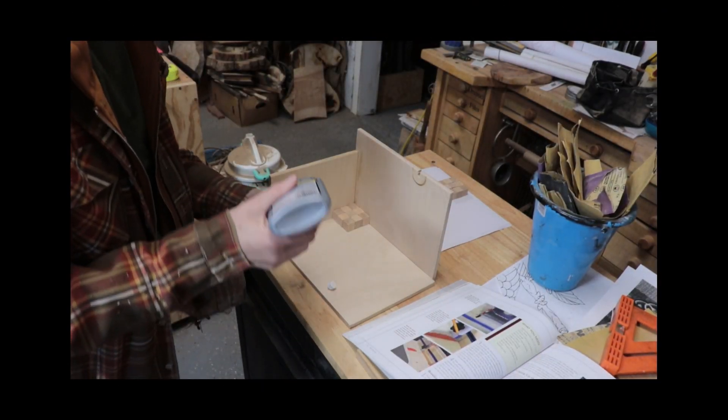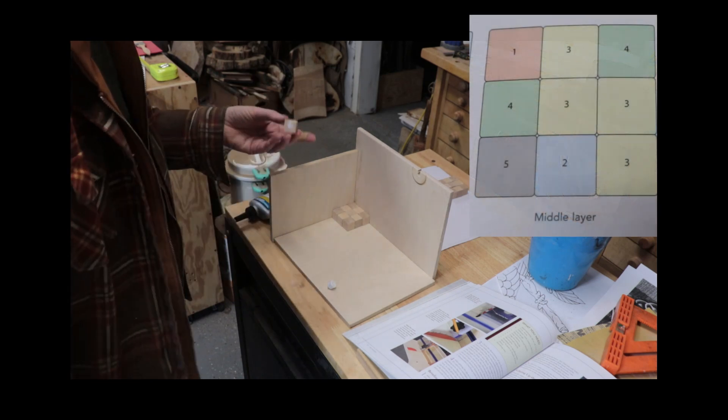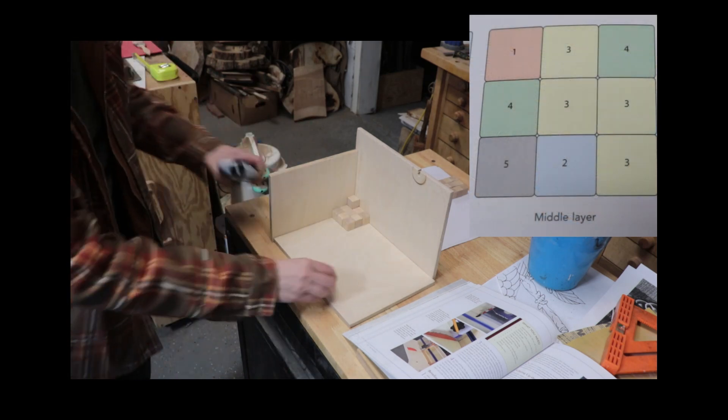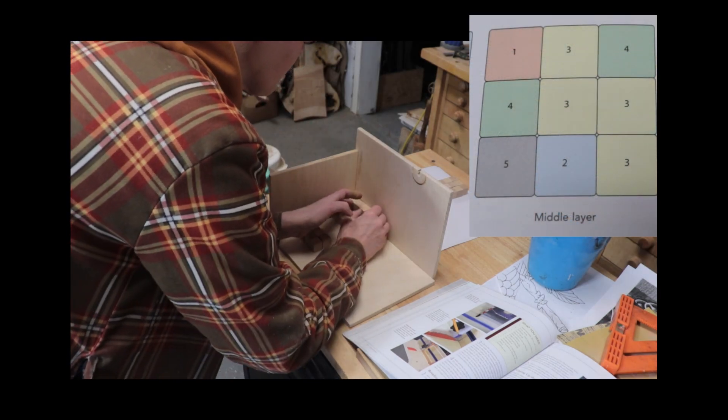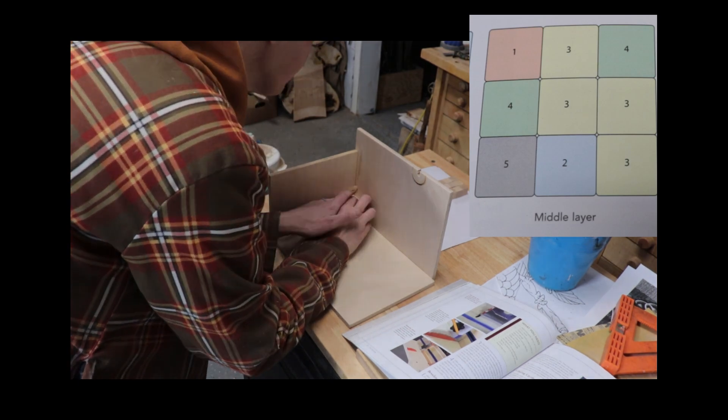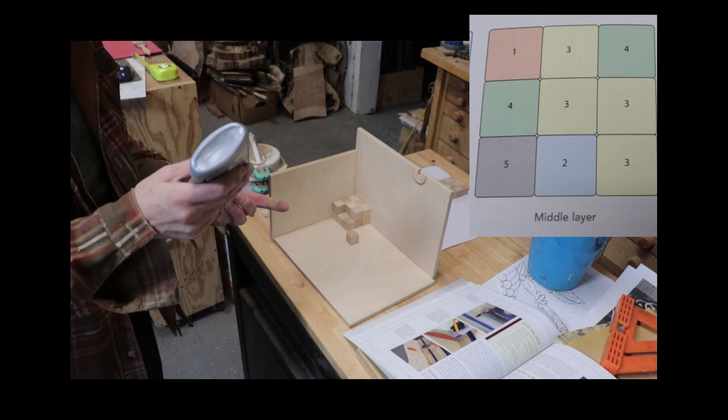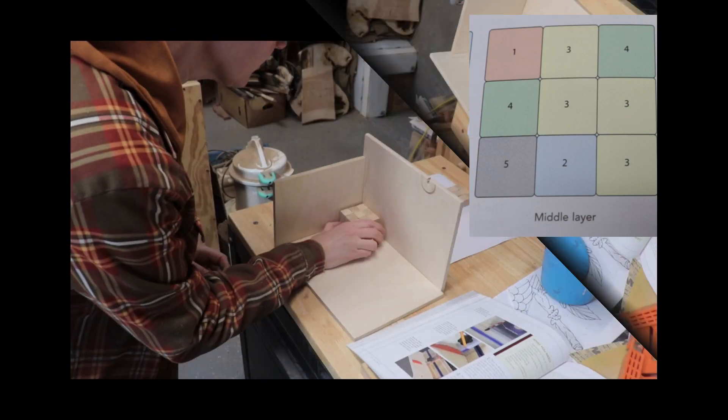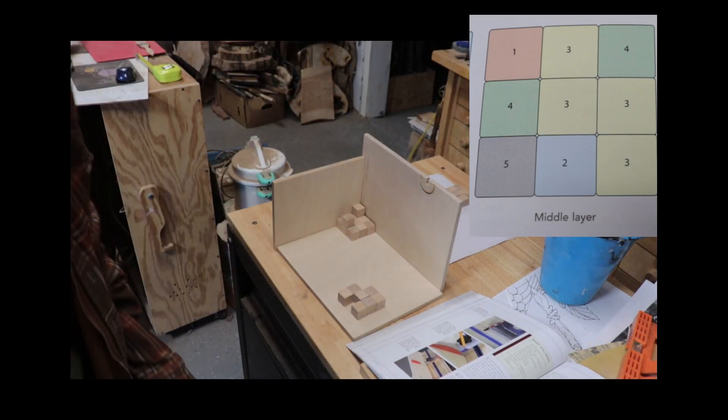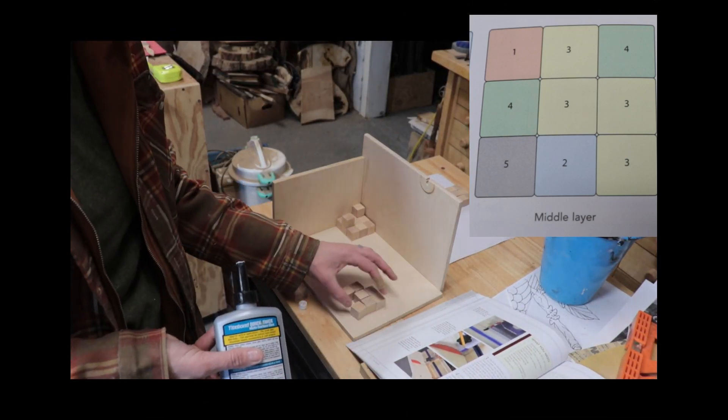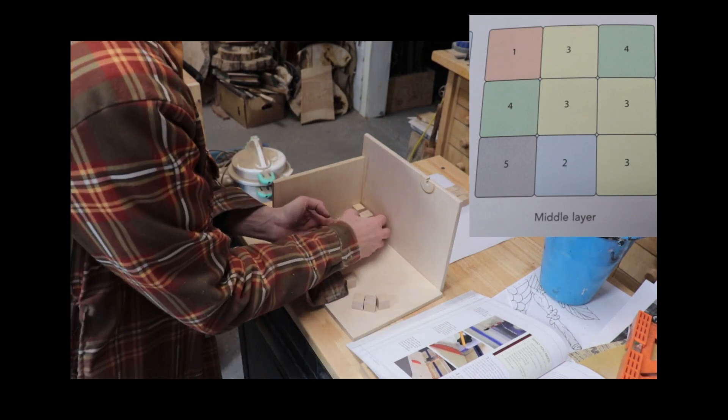Then I saw on the next layer that there was a number one, so I glued that in place. Then put all the other blocks in place loose, just so I could square it up again. Then I saw there was a number two also, so I glued that one on too. And after that set up a bit, then I glued up all the number three pieces and put back the other loose pieces to keep it square again.